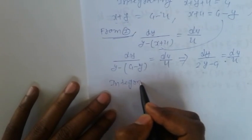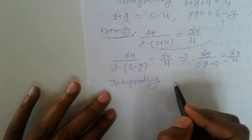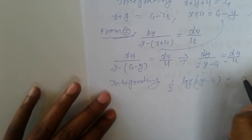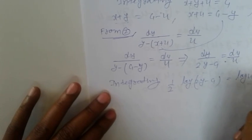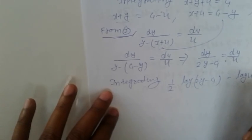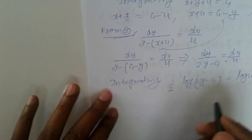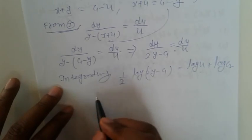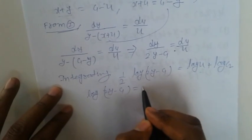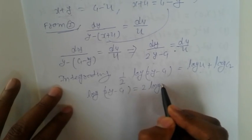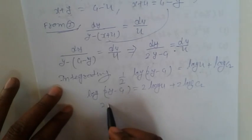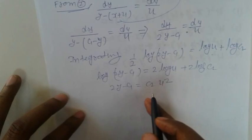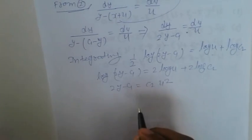Integrating both sides: (1/2) log(2y minus c1) = log u + log c2. Multiplying through by 2: log(2y minus c1) = 2 log u + 2 log c2. Removing logarithms gives: 2y minus c1 = c2 times u squared.